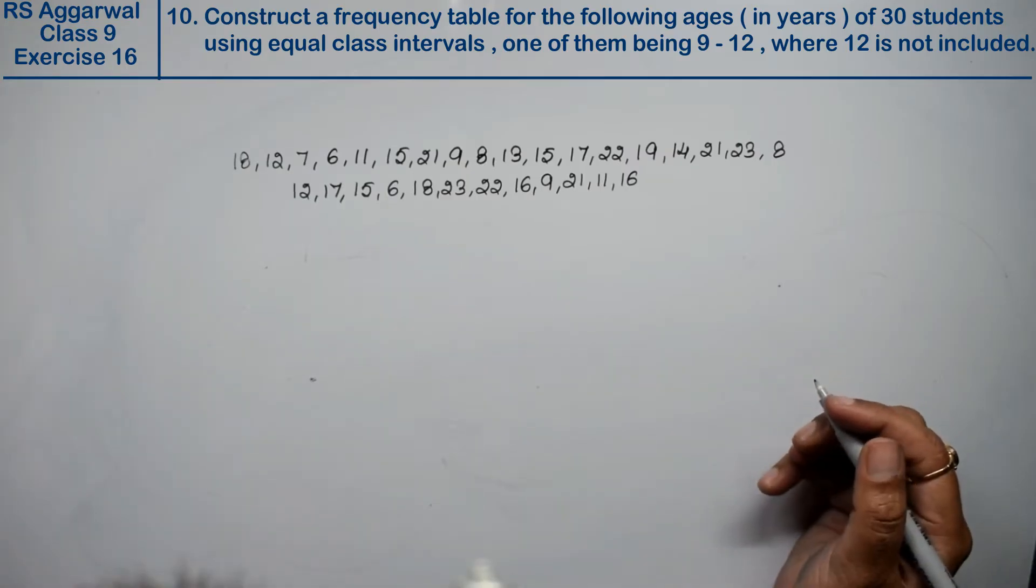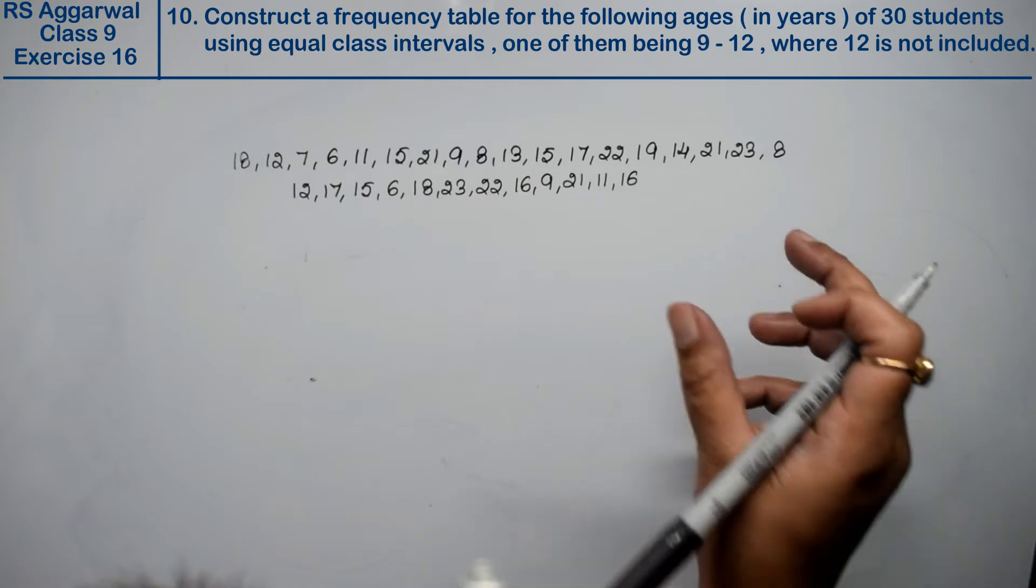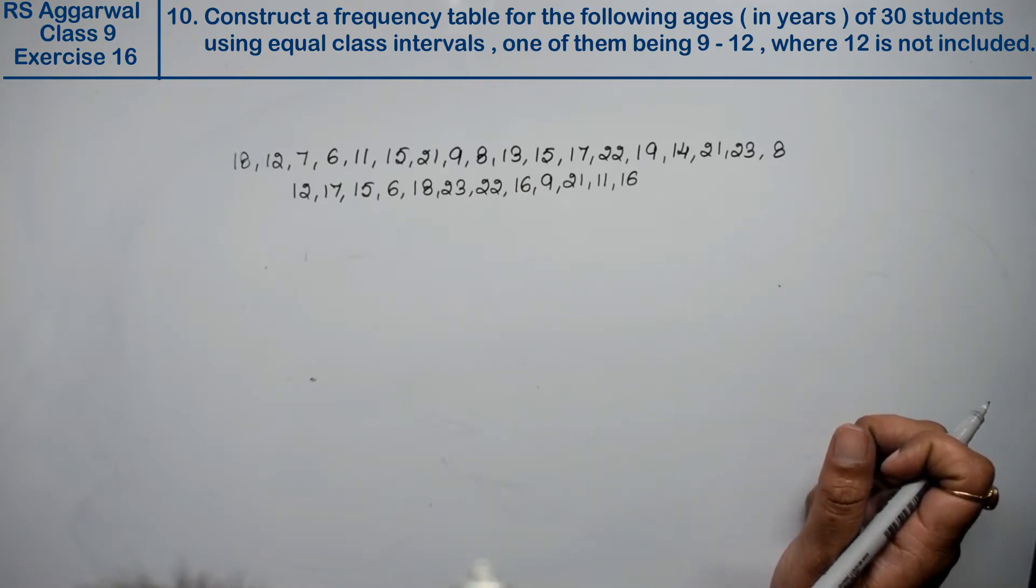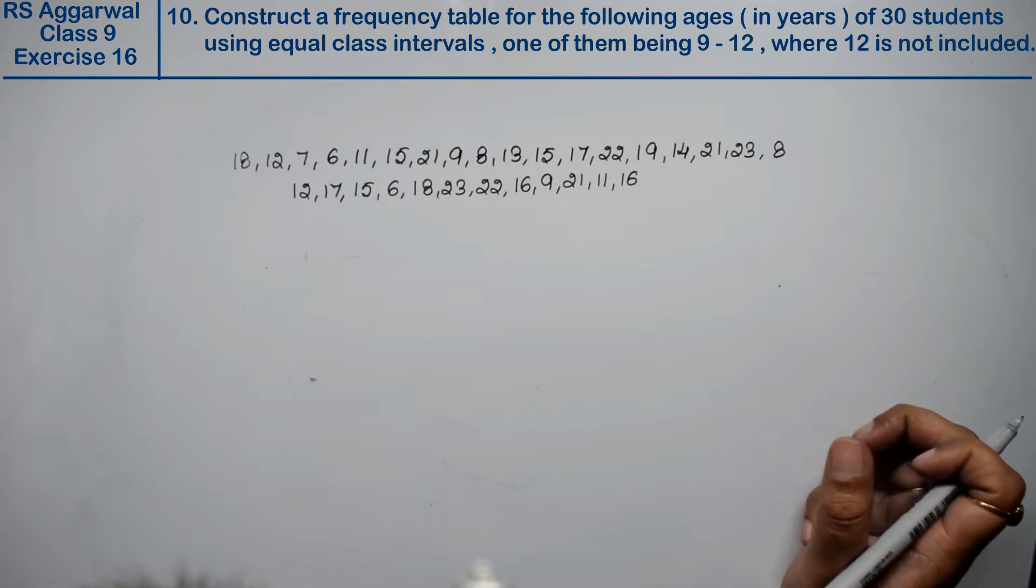Let's do question number 10 of exercise 16, presentation of data in tabular form. Construct a frequency table for the following ages in years of 30 students. We have ages for 30 students using equal class intervals.